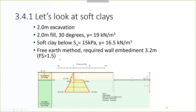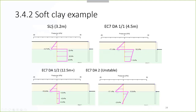With the free-earth method, it would require 3.2 meters embedment with a safety factor of 1.5. When looking at the SLS case net loading diagram on the wall, we have positive 22 kPa on the passive side. But when we apply EC7 combinations, there is minimal resistance because we're reducing the undrained shear strength. The required wall embedment for DA1 Combination 2 comes to 12.5 meters. For DA2, the net loading becomes negative — there is no real resistance, so the excavation is unstable. This would require a soil mixing wall for a 1.8-meter excavation, which is totally unrealistic.